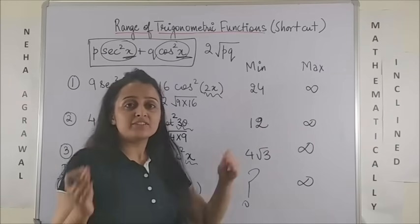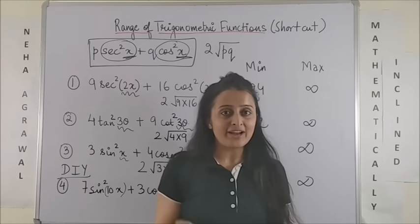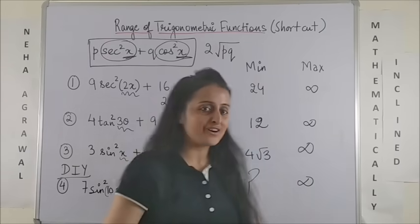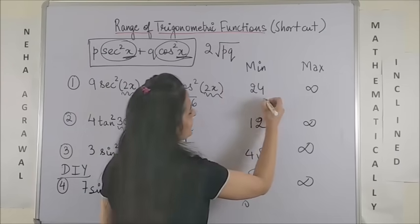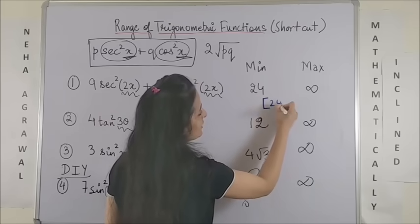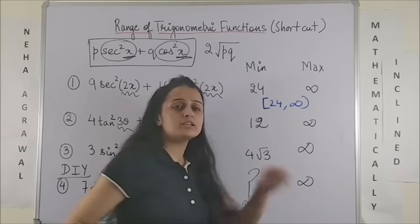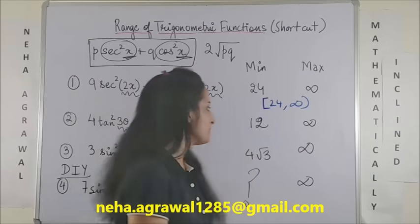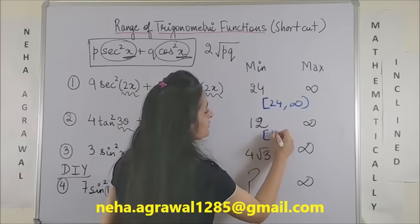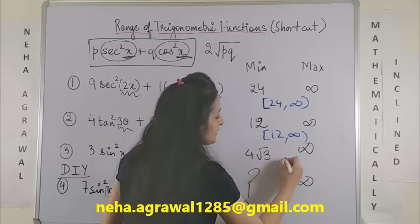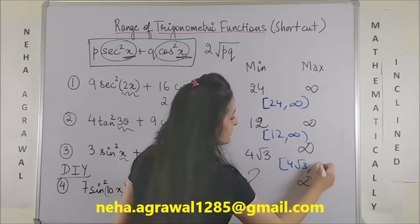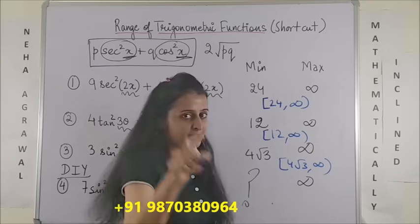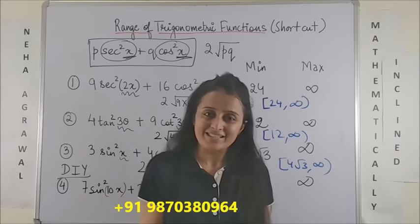Please note, if the same question comes as find the range for the given function, then in that case, the range over here would be 24 included and infinity is always open. Minus infinity or infinity, they are always open. Here, it would be 12 to infinity. Here, it would be 4 root 3 to infinity. Here, it would be what you will tell me in the comment section below.